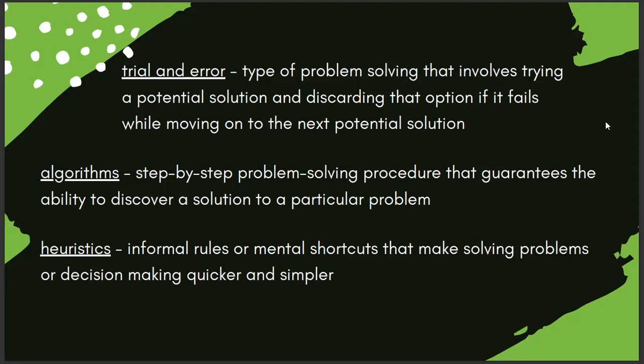Heuristics are informal rules or mental shortcuts that make solving problems or decision making quicker and simpler — whether from past experiences or something someone gave us to help through the process. For baking a cake, using a cake mix is a shortcut where I don't have to measure any of the dry ingredients because it's already done for me. But it's not foolproof — it's not a step-by-step algorithm that guarantees a solution every time. It may or may not work depending on what I do with the remaining steps.